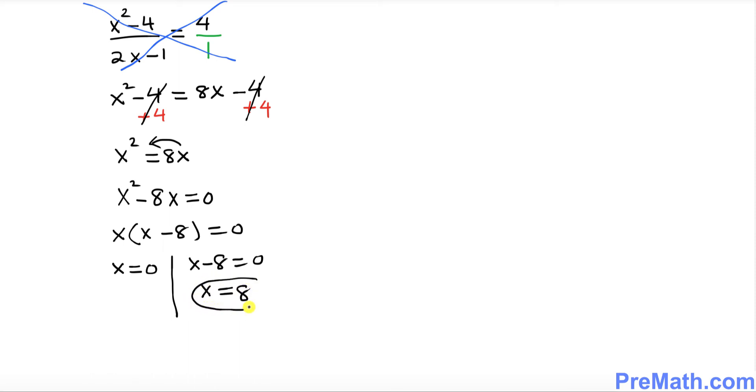So we supposed to have two, we have one solution X equals to 8, the other one is 0.